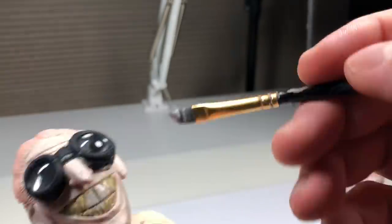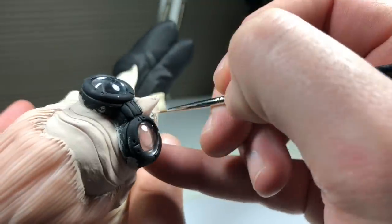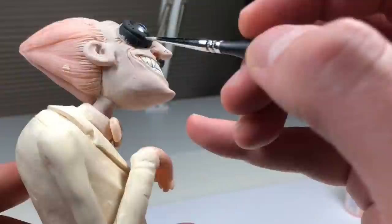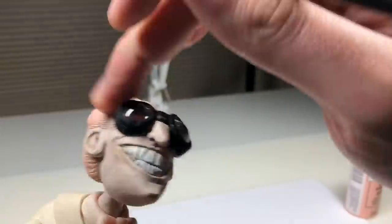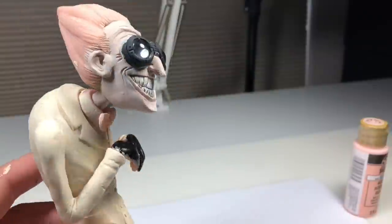Once that's completely dry, I'm going over all of the teeth, dry brushing some warm white. Those came out really good. I was really happy with those. Now I'm just darkening some of his wrinkles or antiquing them, and then painting his gloves black.